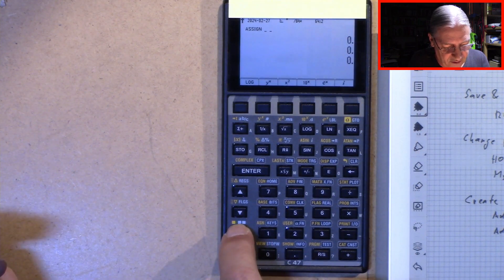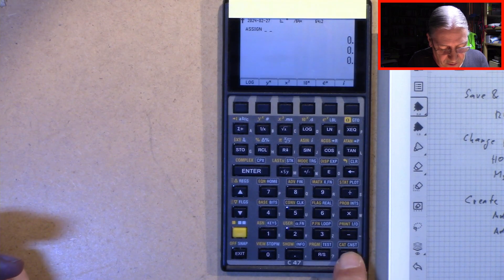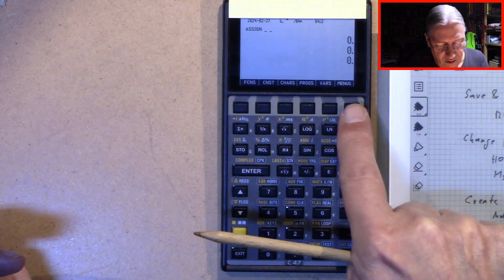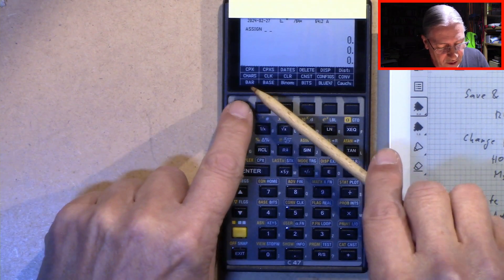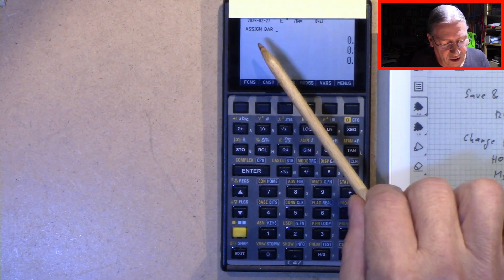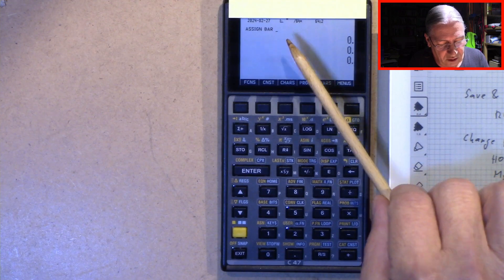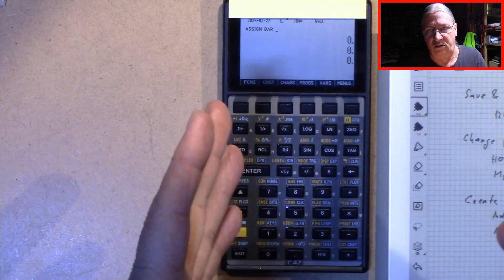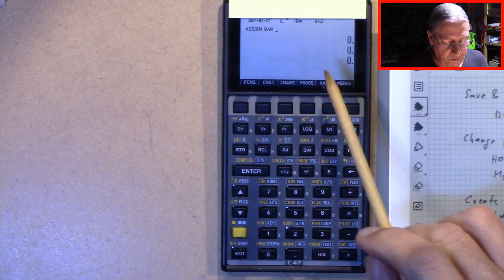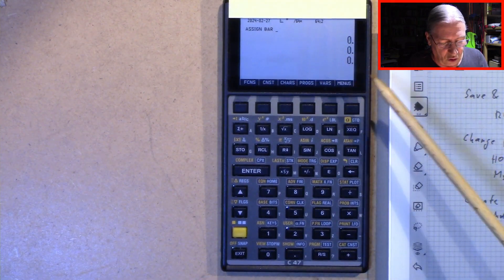I press shift once to reach the catalog function. Go into menus. Press bar. And now I can assign bar to another button or soft key in this case.